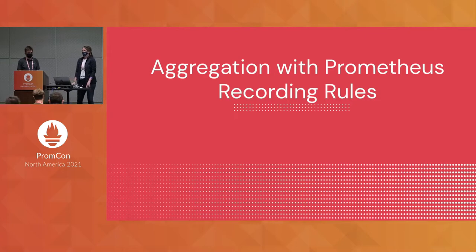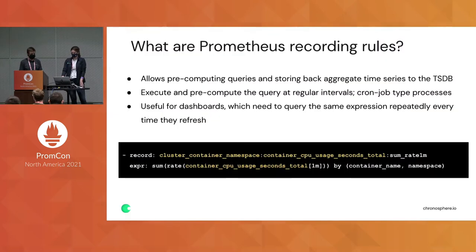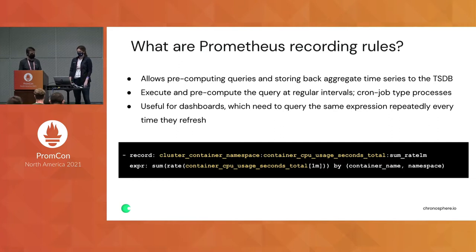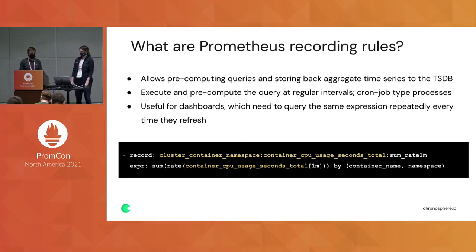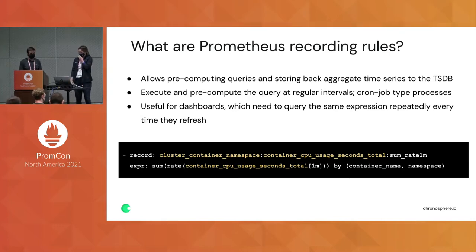One of the ways you can do this aggregation before the query to get improved results is through Prometheus recording rules. They allow you to precompute frequently needed or computationally expensive expressions, which you can then store back as a new set of time series to your time series database. These rules are evaluated and precomputed on regular intervals using cron-job-type processes, making them really useful for dashboards where you need to use the same expression over and over again without reevaluation every time.